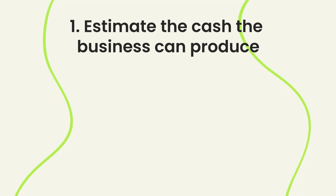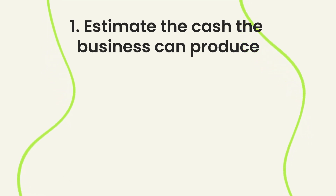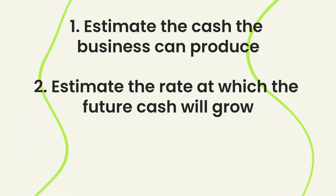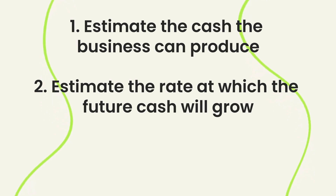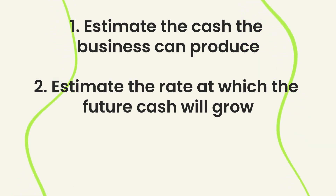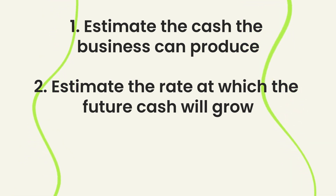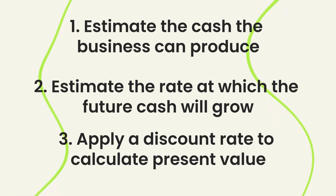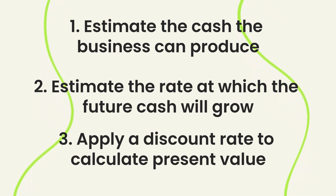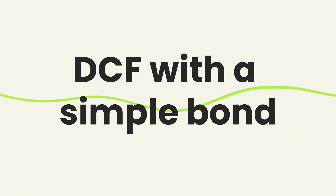There are three steps to valuing a stock based on the DCF. First is estimating the cash that the business can produce. Then it's estimating the rate at which that cash will grow, meaning the future cash flows of the business. And three, applying a discount rate to calculate the present value of those cash flows.